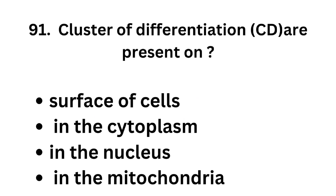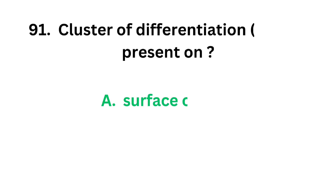Question number 91. Cluster of Differentiation (CD) are present on: Option A: Surface of cells, Option B: In the cytoplasm, Option C: In the nucleus, Option D: In the mitochondria. The correct answer is Option A — surface of cells. Cluster of Differentiation (CD) markers are present on the surface of cells.